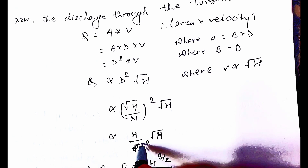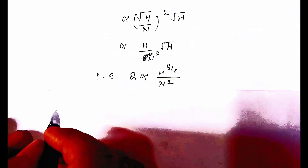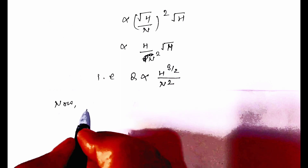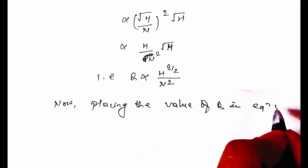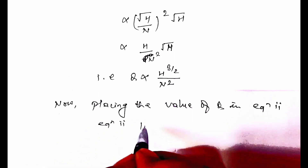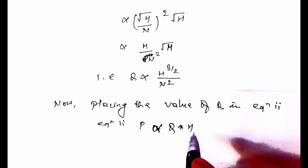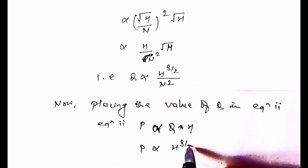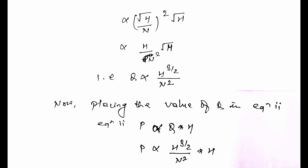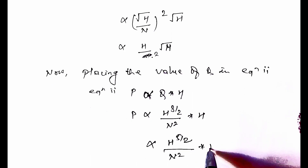Note: there was a correction — the denominator should be N squared, not N. Now placing the value of Q into equation two, where P is proportional to Q times H: P is directly proportional to (H to the 3/2 / N squared) times H, which simplifies to H to the 5/2 divided by N squared.